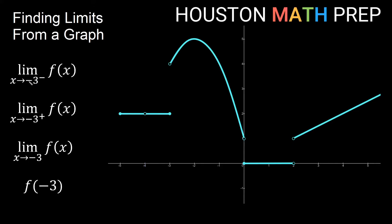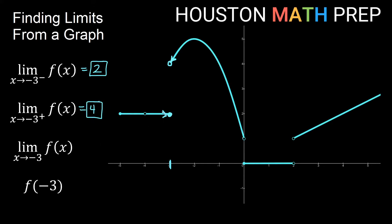Now let's look around x equals negative 3. The limit as we approach negative 3 from the left side: we're on the horizontal line approaching a dot at a y value of 2. From the positive direction, from the right, we'd be on the curvy piece approaching this open hole, which is at a y value of 4. So the left limit is 2 and the right limit is 4.